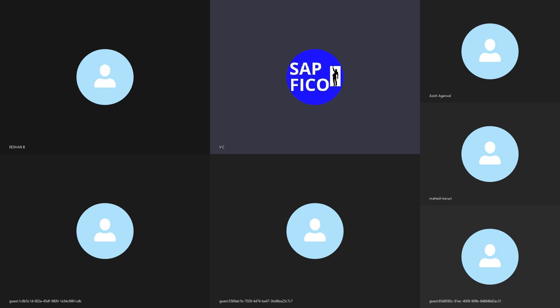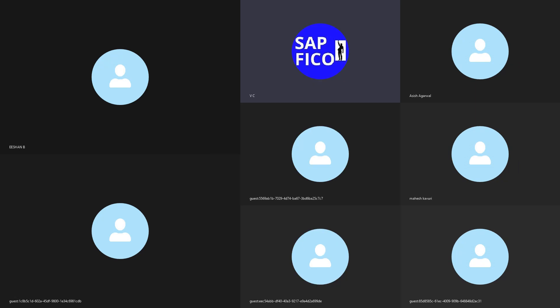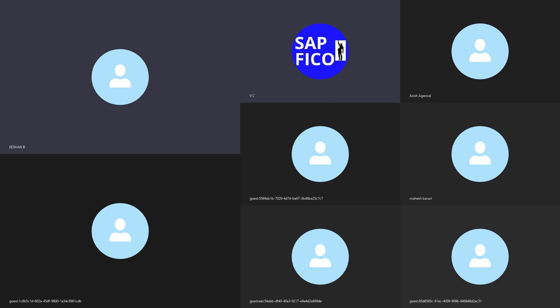Now I will go ahead and ask you interview questions on the SAP FICO enterprise structure. You need to tell me the exact answer for each question. I will start with the first one — Ishan. What do you mean by company code?